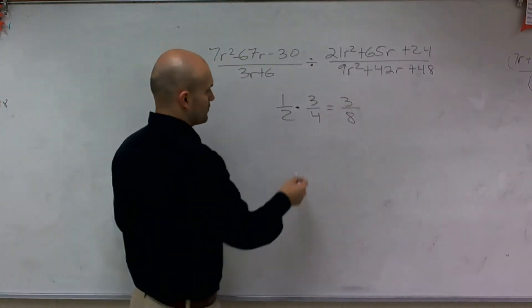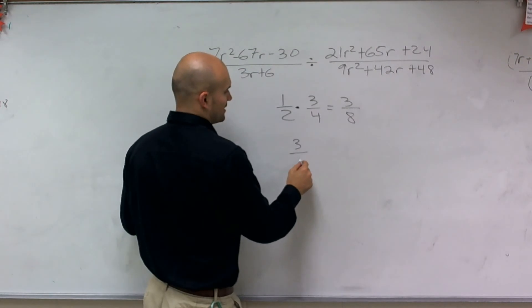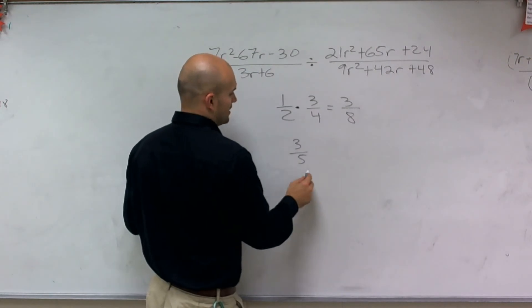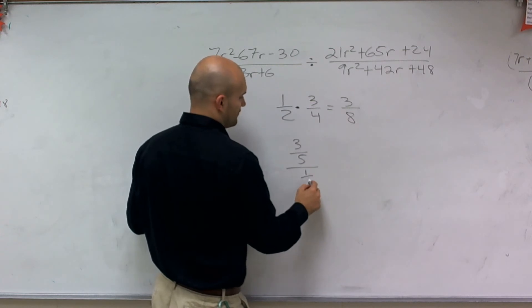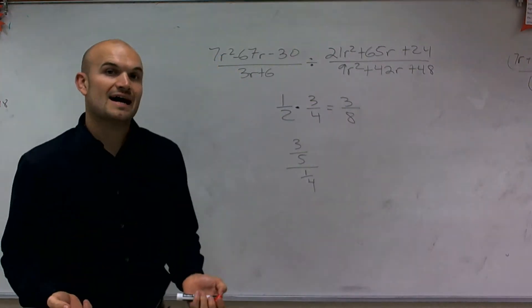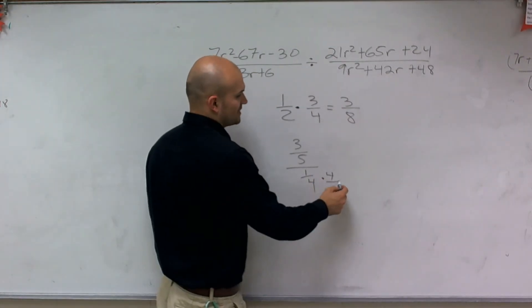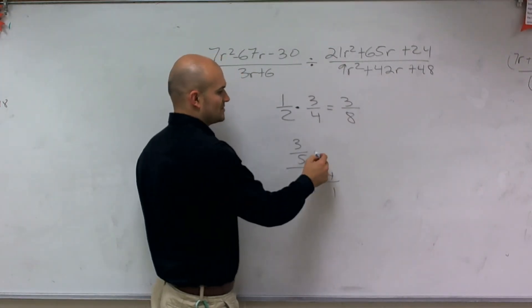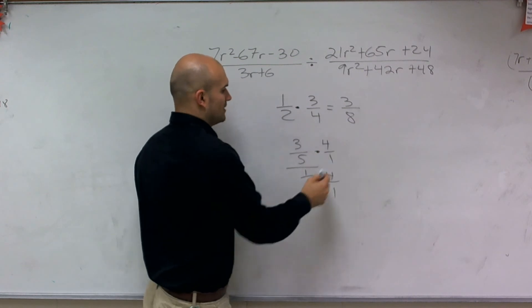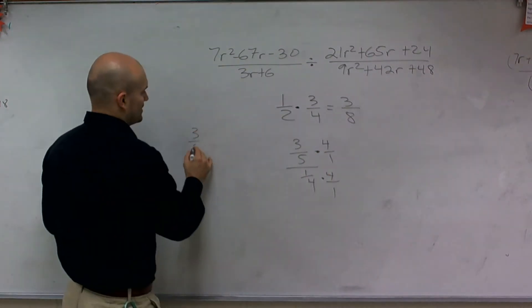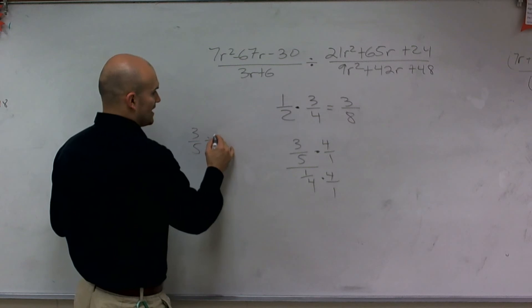However, when we're dividing fractions, let's say I want to divide 3 fifths divided by 1 fourth. When we divide fractions, we can't divide by a fraction. So a lot of times what we say is we get the fraction off the bottom by multiplying by its reciprocal.